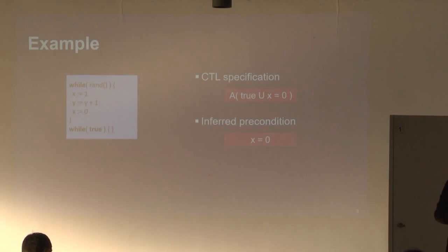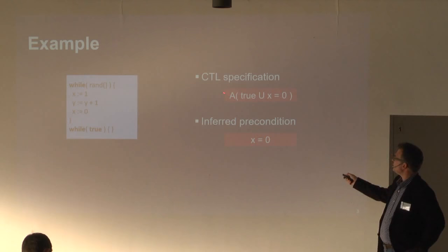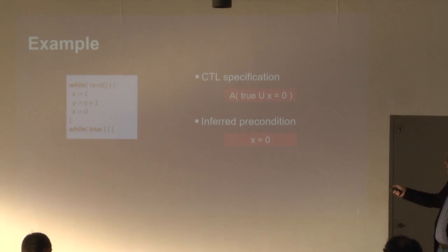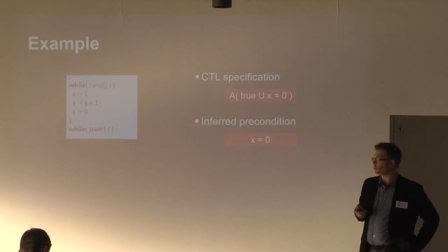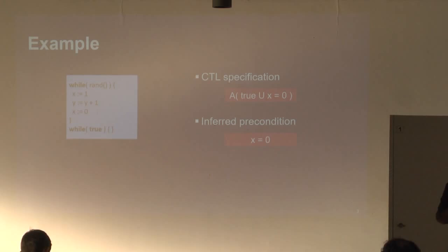The formula I will use is: in all futures, the property that x equals zero holds eventually. Checking this specification on this program, you infer the precondition x equals zero. If x is zero initially, this formula certainly holds right from the start. On the other hand, if x is not zero initially, it could happen that the first loop iterates zero times, and then x will never be zero. So you really need this kind of precondition.